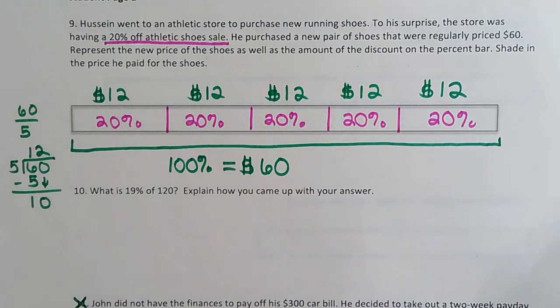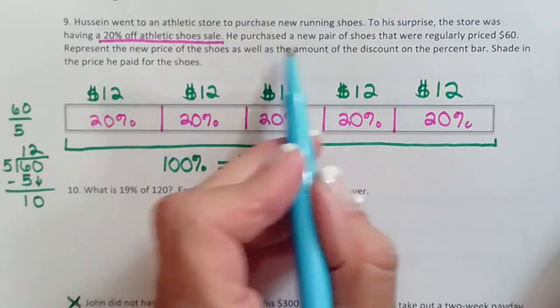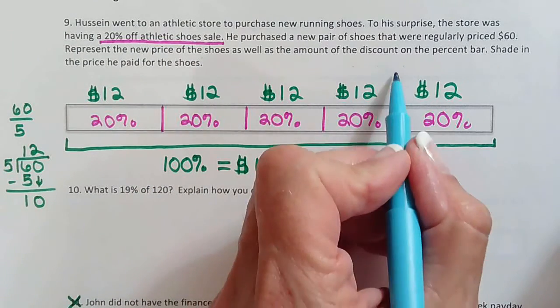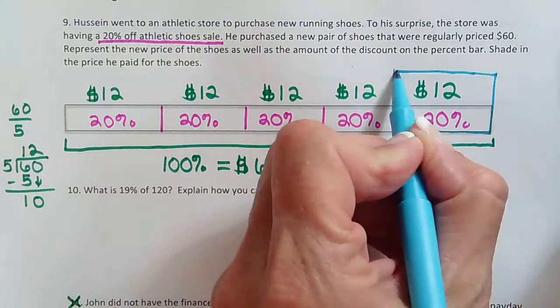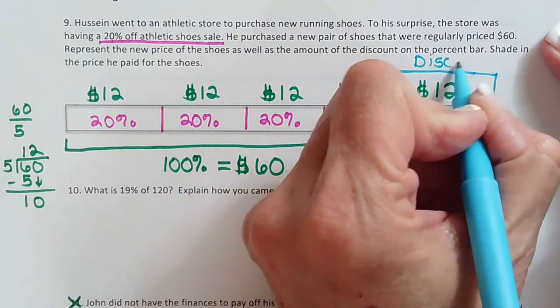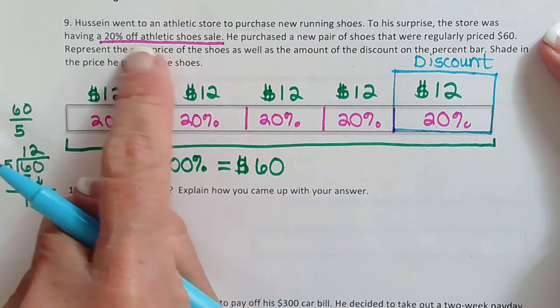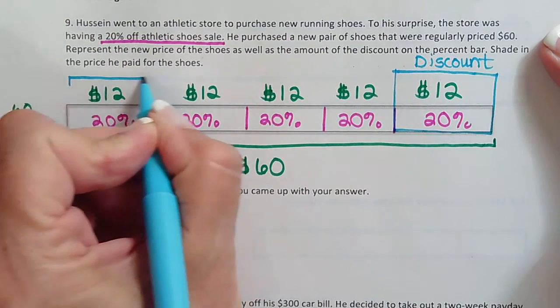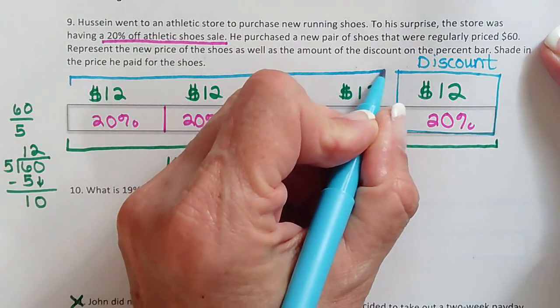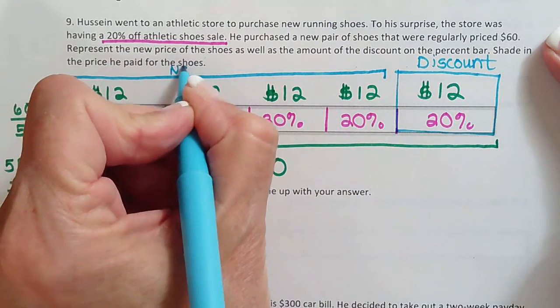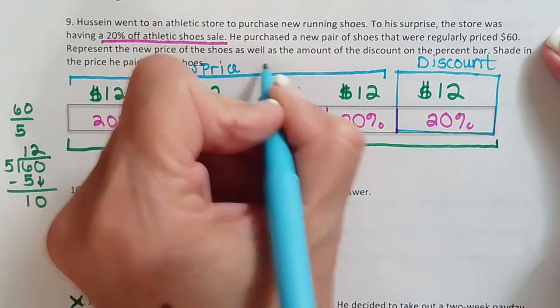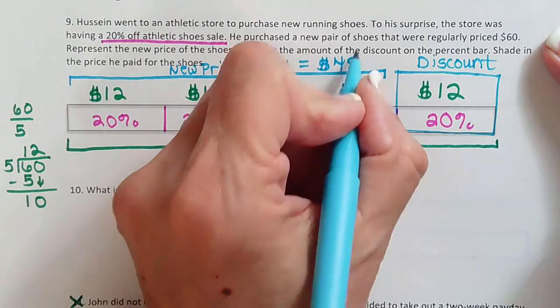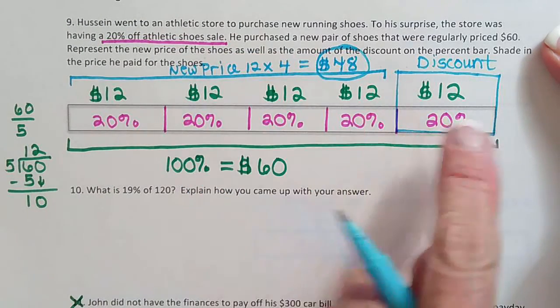Okay, so this, it says, represent the new price of the shoes as well as the amount of the discount. So right here, we would write discount because it said he got 20% off. So that means $12 was taken off. This is a new price which would be 12 times 4 equals $48. So that's how much he paid.